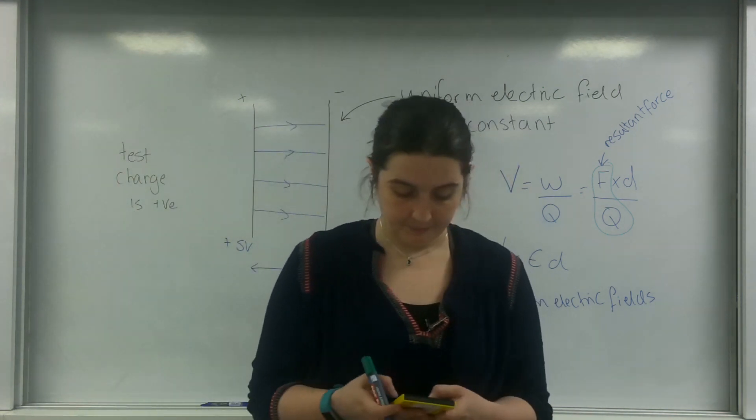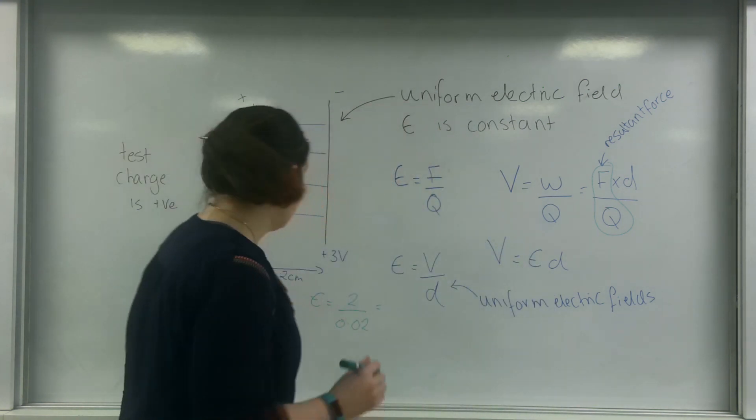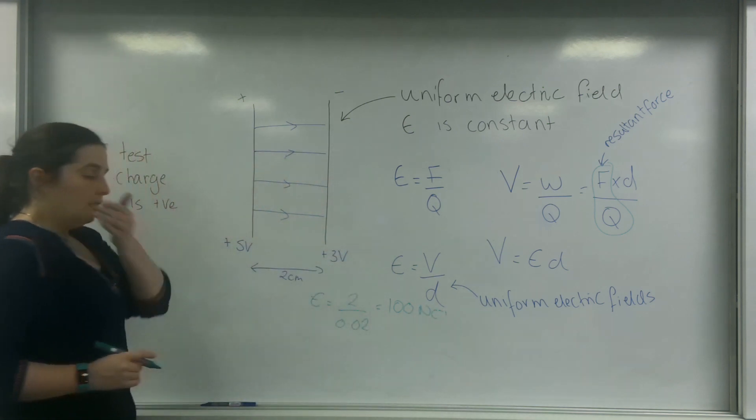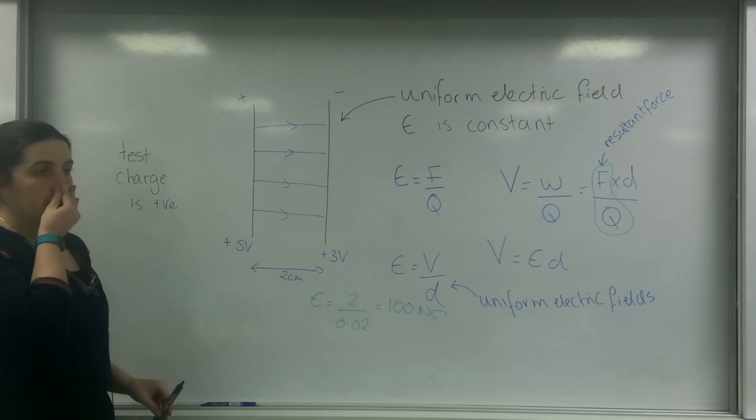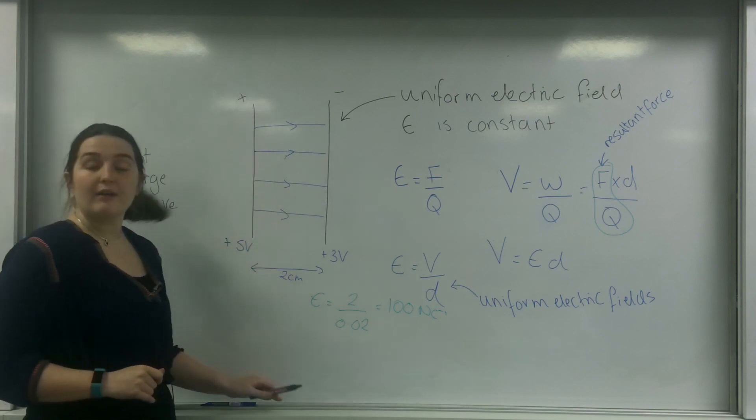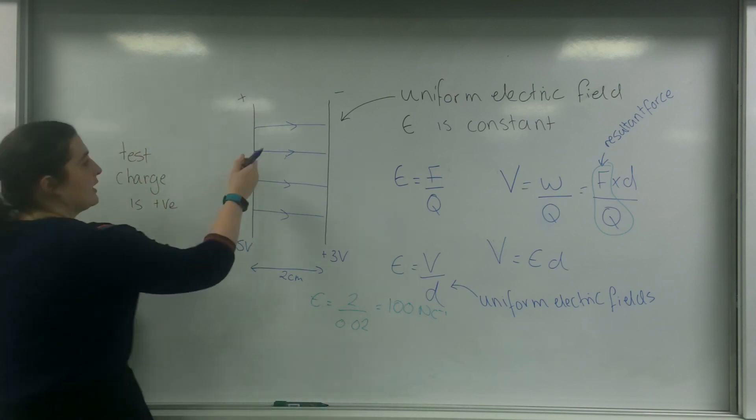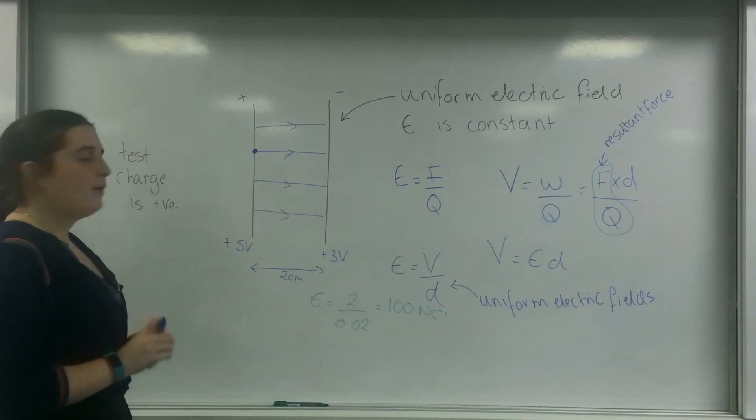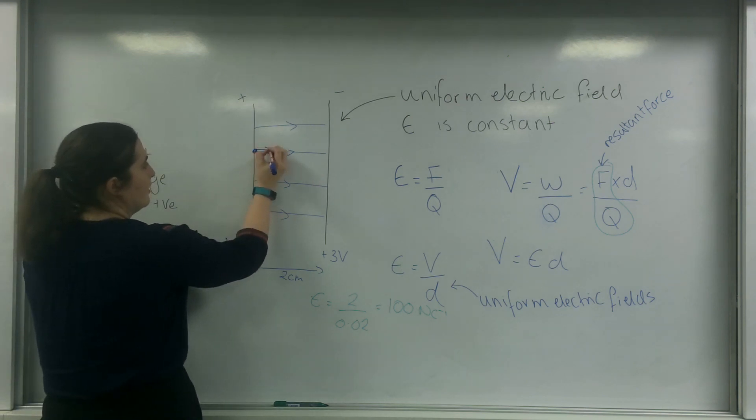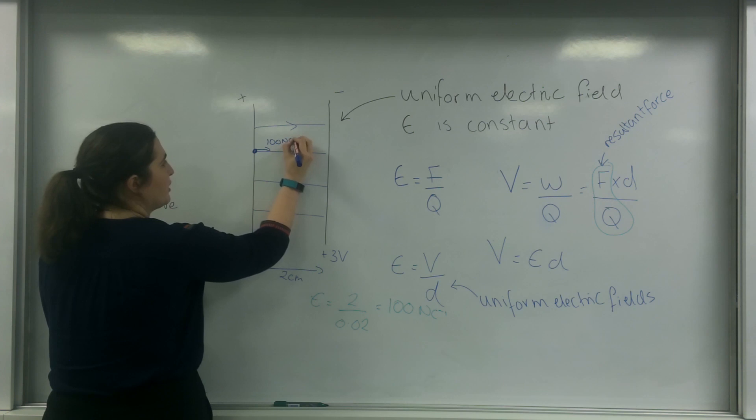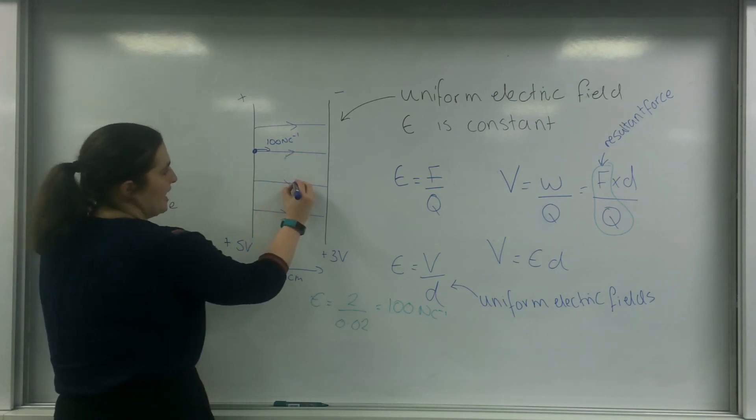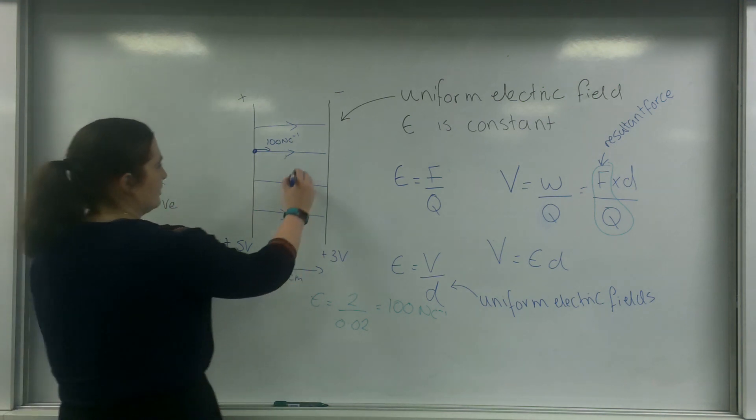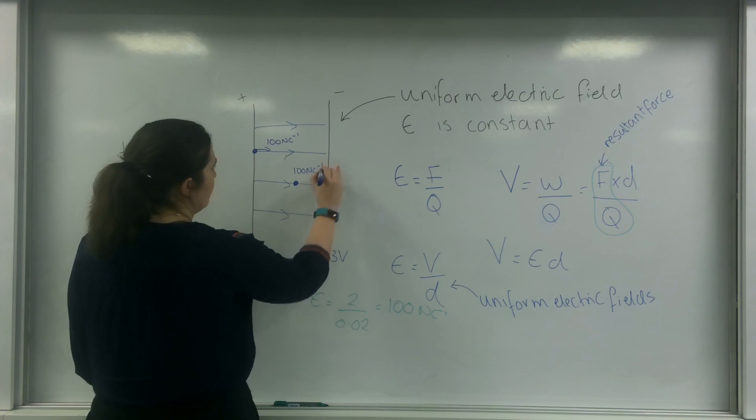Divided by my distance, which is going to be 0.02. I'll put that into my calculator. I get an answer of 100 newtons per coulomb. This means, because this is the same all the way through, if I put a charge here, it would feel 100 newtons per coulomb. If I put the charge here, it would also feel 100 newtons per coulomb.